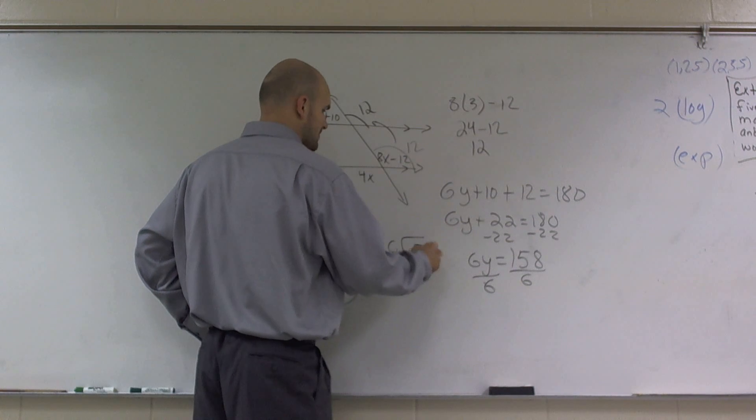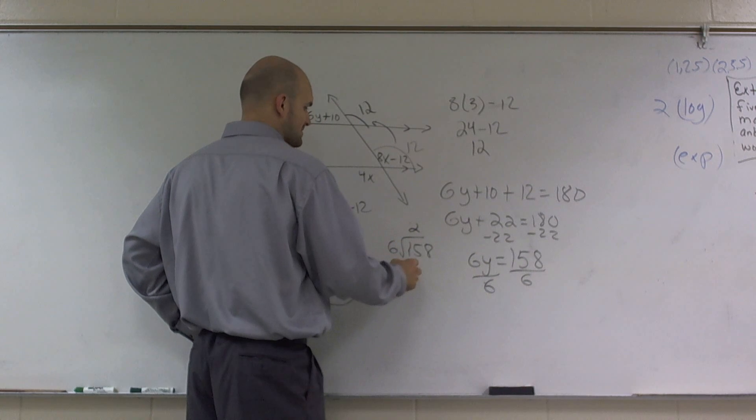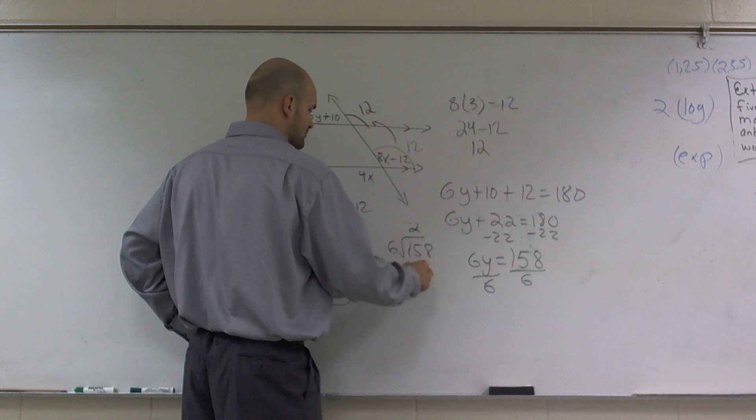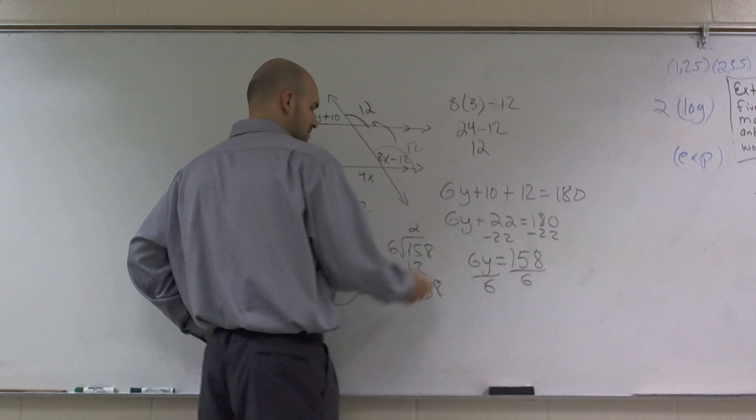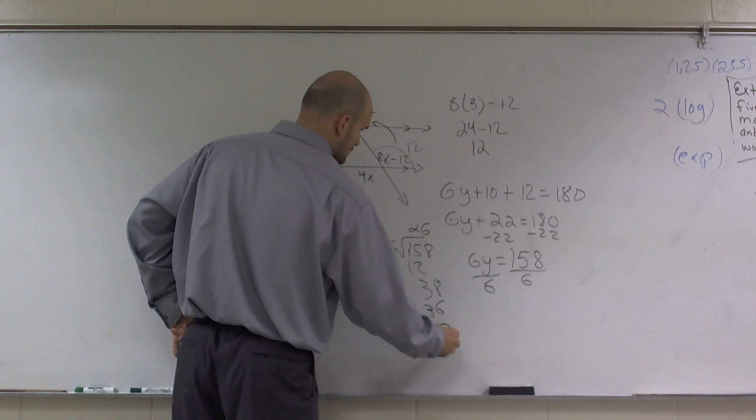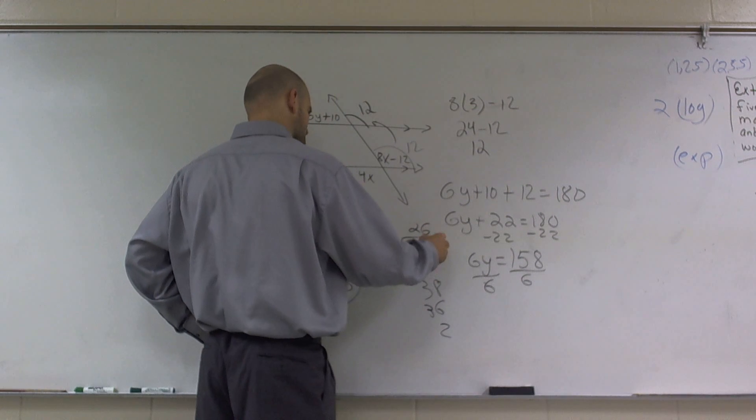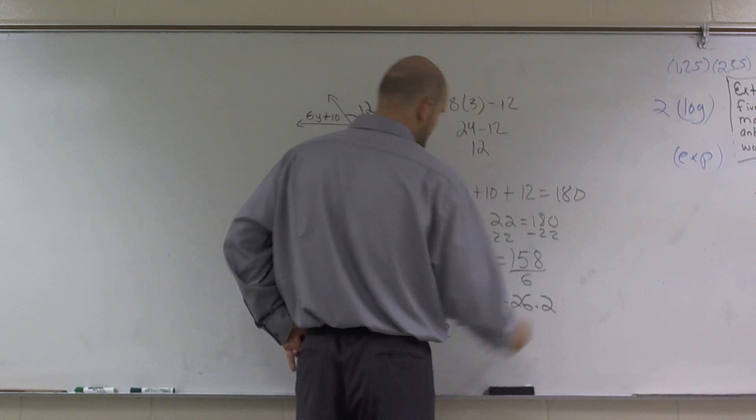So let's see. 6 goes into 15, 2 times. 2 times 6 is 12. Bring down a 3. Bring down a 8. 6 goes into 38, 6 times. 6 times 6 is 36. Drop down to 2. So therefore, y equals 26.2.